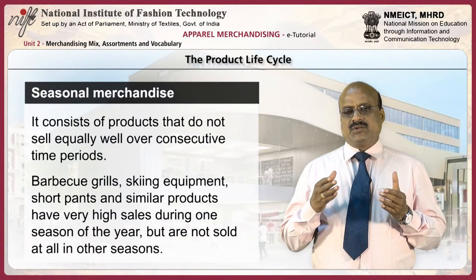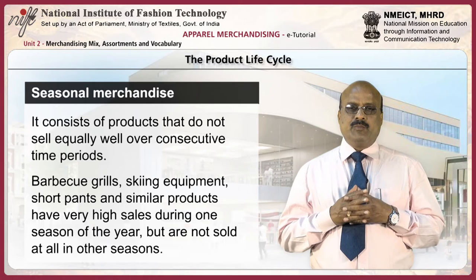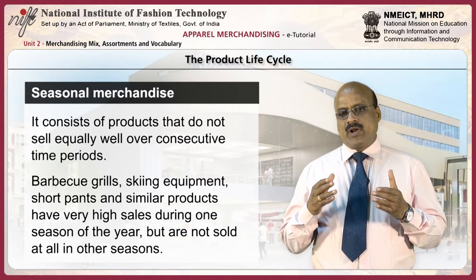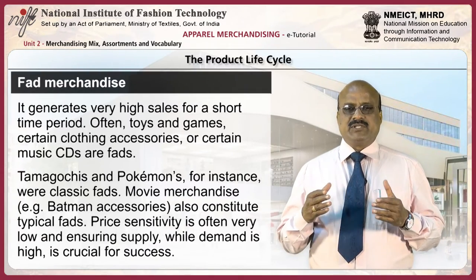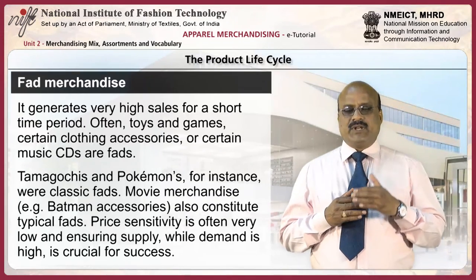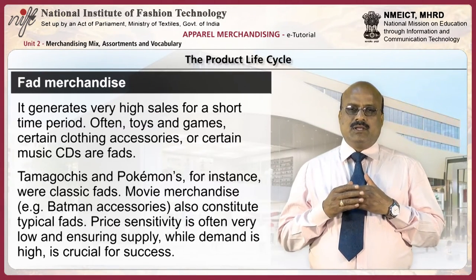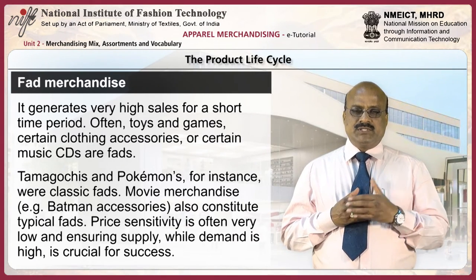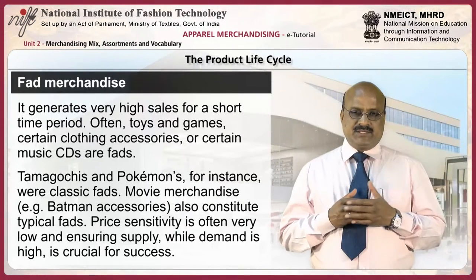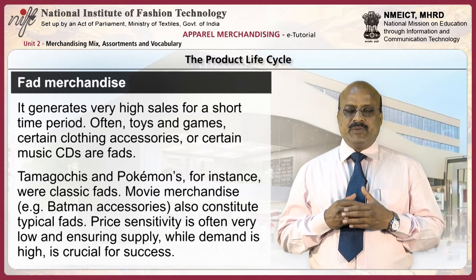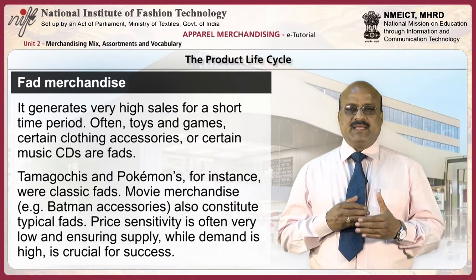Seasonal merchandise consists of products that do not sell equally well over consecutive time periods. Barbecue grills, skiing equipment, short pants and similar products have very high sales during one season of the year but are not sold at all in other seasons. Fad merchandise generates very high sales for a short period. Often toys and games, certain clothing accessories or certain music CDs are fads. Tamagotchis and Pokemon were classic fads. Movie merchandise, such as Batman accessories, also constitutes typical fads. Price sensitivity is often very low and ensuring supply while demand is high is crucial for success.